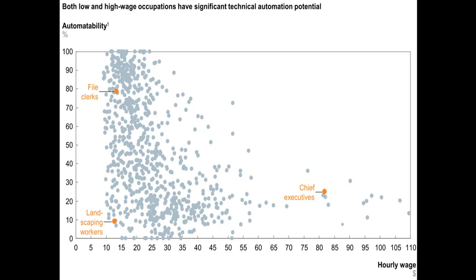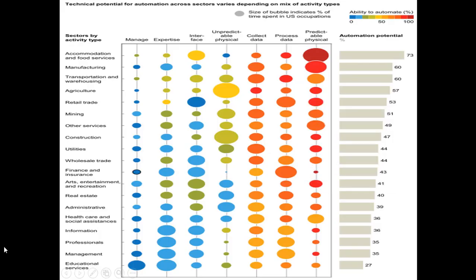Let me give you one last figure from the McKinsey report showing how likely it is that your particular profession could be automated. In the McKinsey report I showed you on Blackboard, this chart comes from page 7. On the left side of the chart, it identifies different sectors of work such as agriculture, mining, construction, wholesale, et cetera.